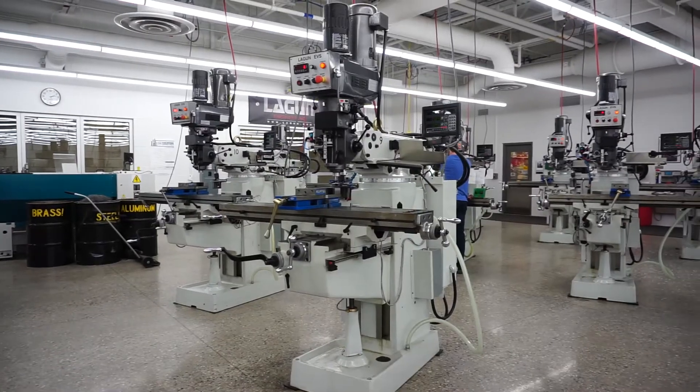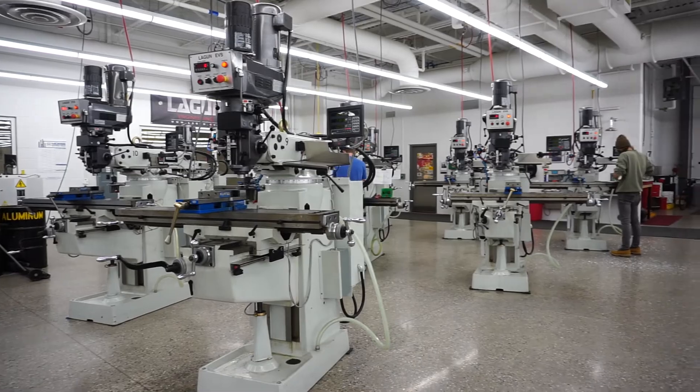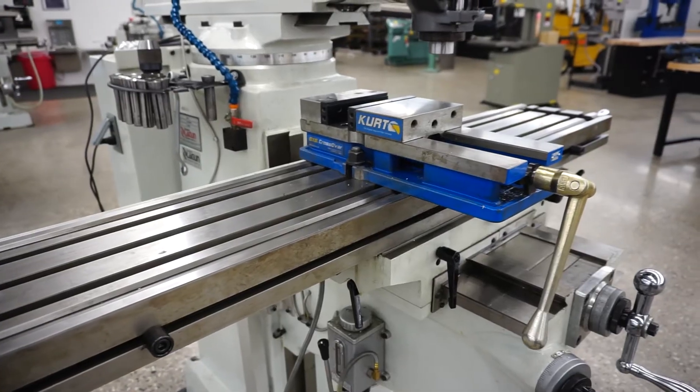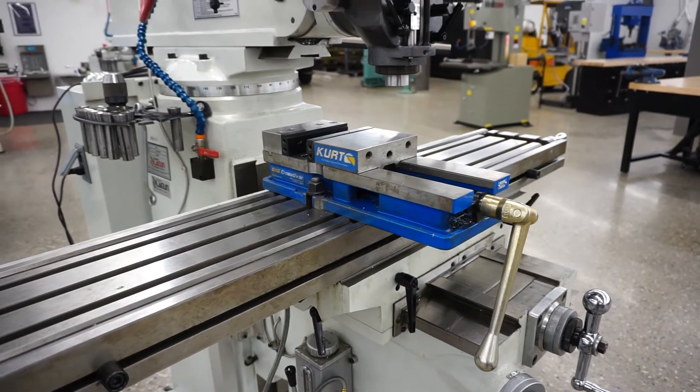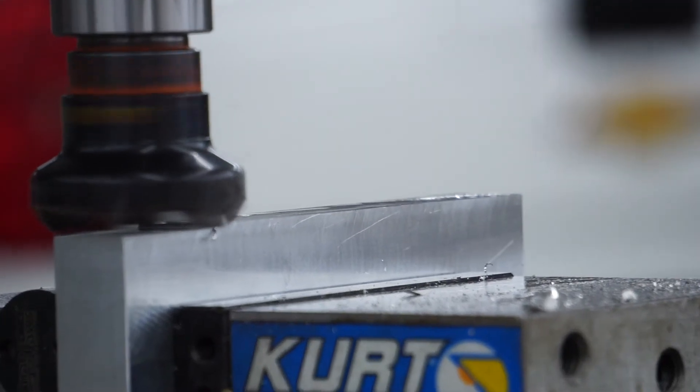In their first two years, students often begin in the manual side of the shop where they can use vertical manual milling machines to perform various cutting operations on their part.